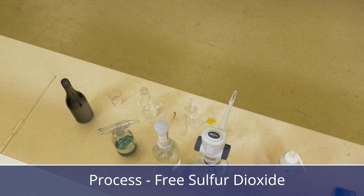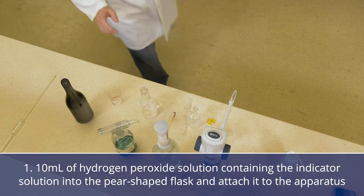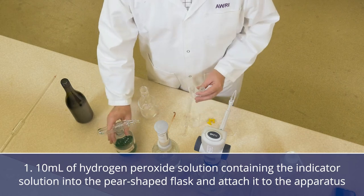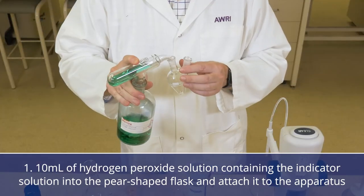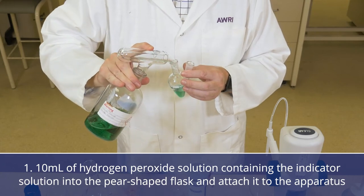This is the process for measuring free sulfur dioxide. The first step is to put about 10 mL of hydrogen peroxide solution into the pear shaped flask and then attach it to the apparatus.